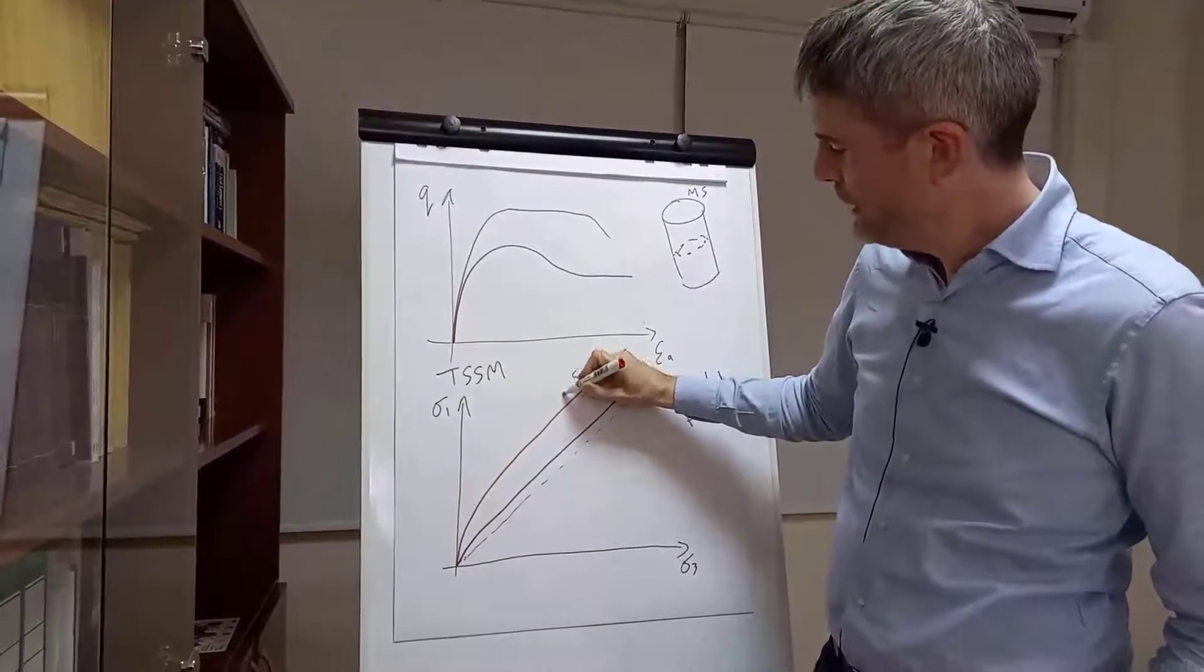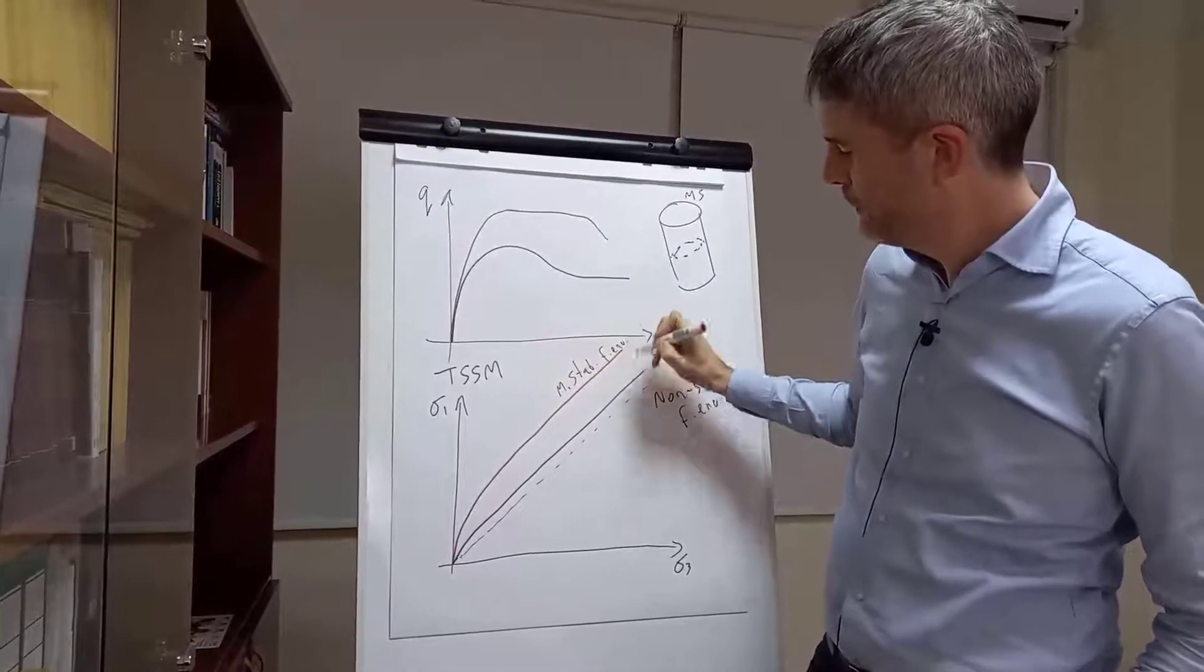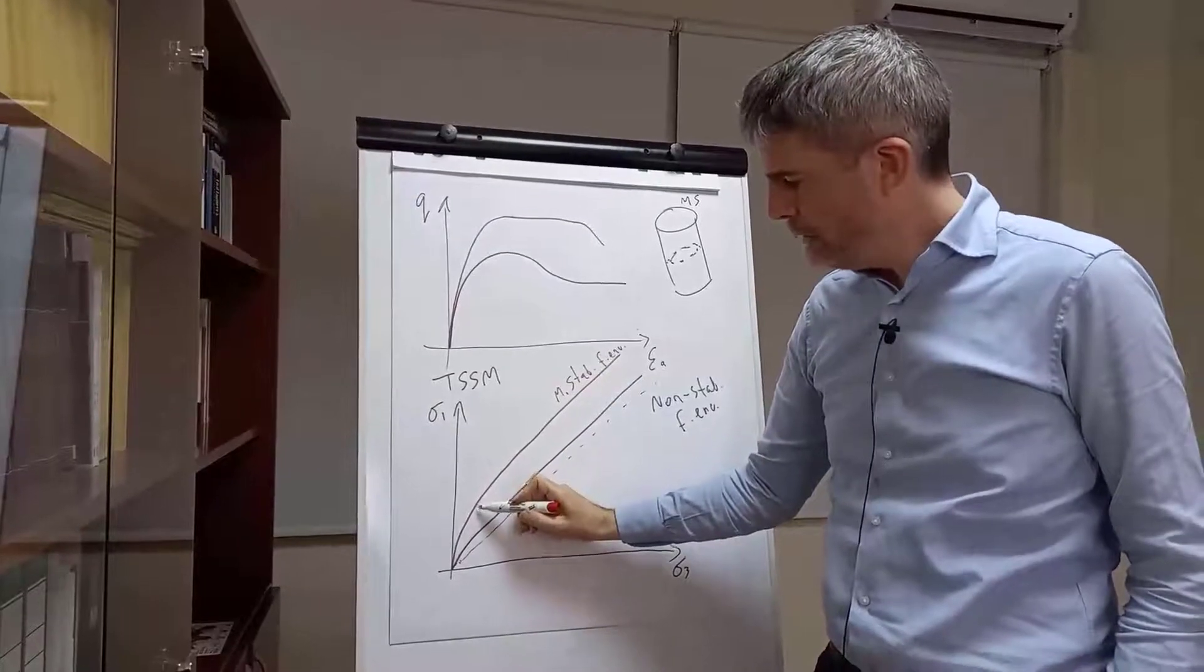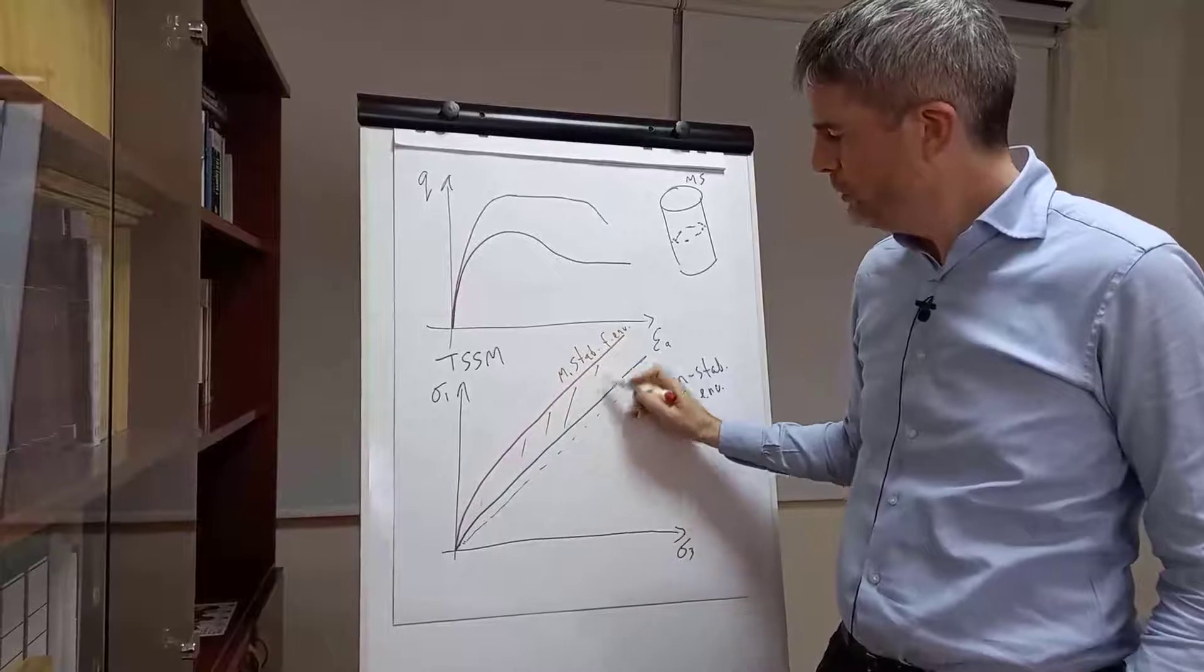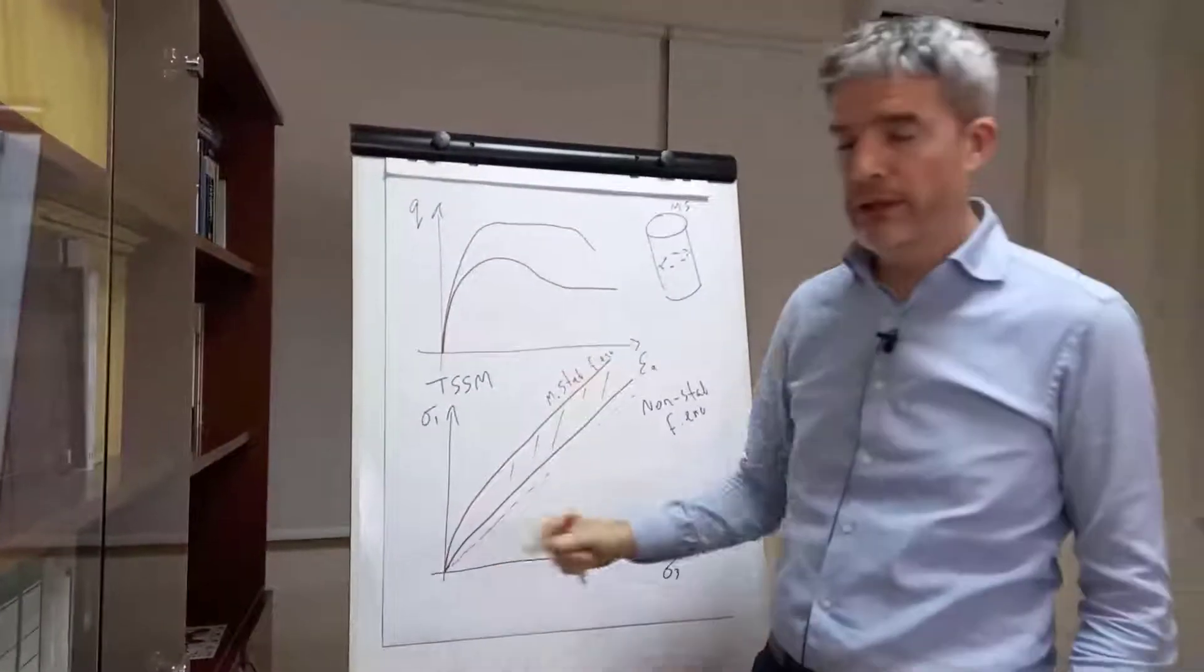So, that is the mechanically stabilized failure envelope. The area between these two represents that additional strength that we see here at all the different confining stress levels.